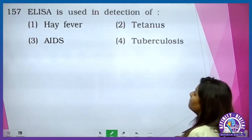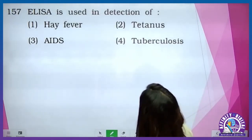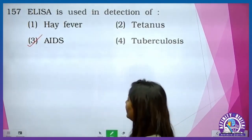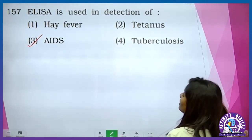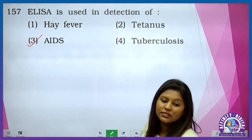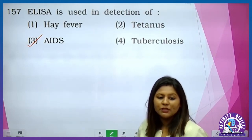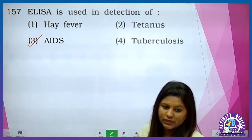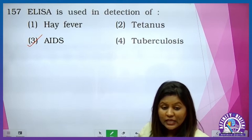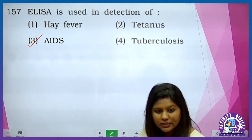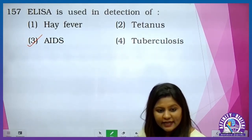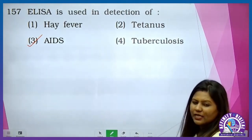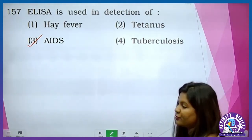ELISA is used in the detection of AIDS. ELISA ka full form hota hai enzyme linked immunosorbent assay. Iski madad se AIDS se jo antibodies develop hui hai humare body mein, ya phir AIDS ka jo pathogenic determinant hai — that is the antigen — usko determine karne mein madad karta hai. So there are various types of ELISA.